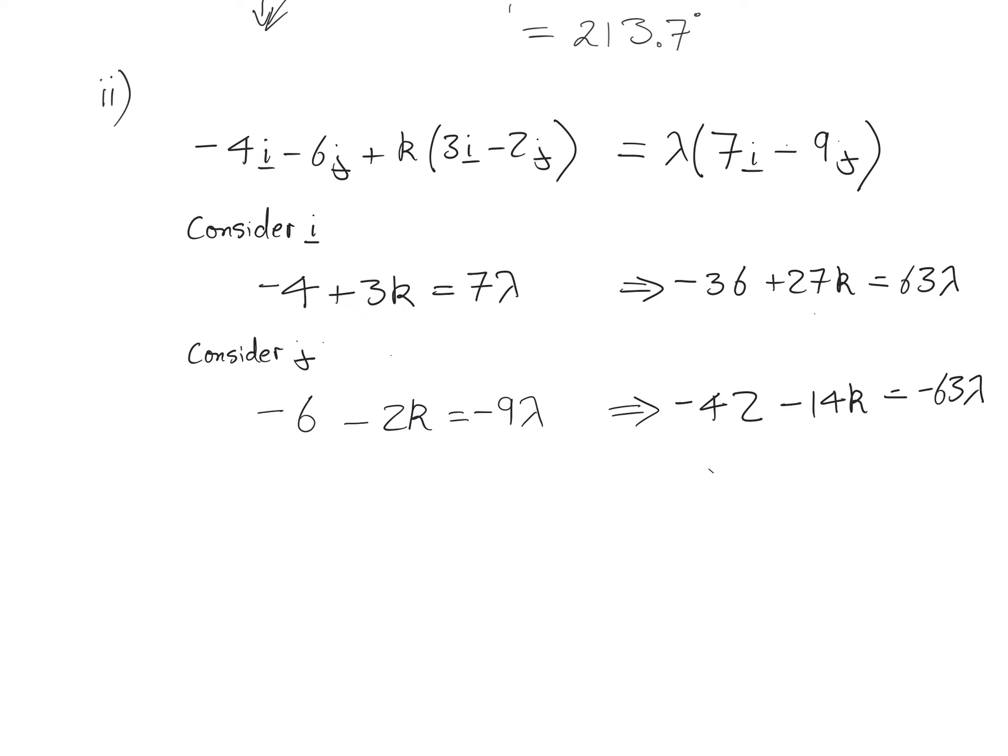I'm then going to add the equations together, so the lambdas go. So I get minus 78 plus 13k equals 0. So I've got k is 78 over 13. I don't know my 13 times table, but my hope is it goes exactly, and it does. It is 6. There we go. So I hope that makes sense.